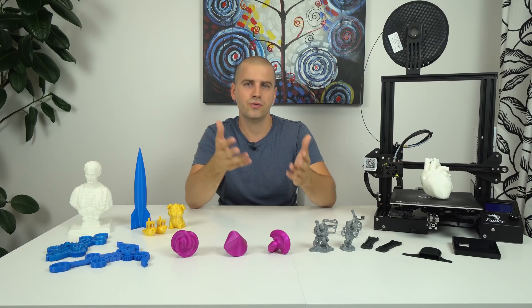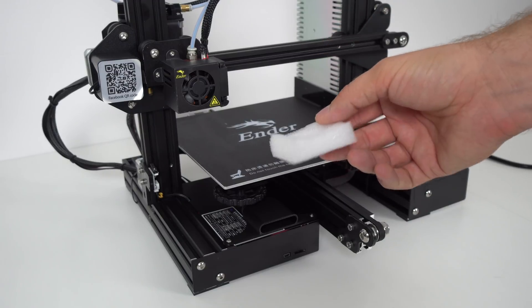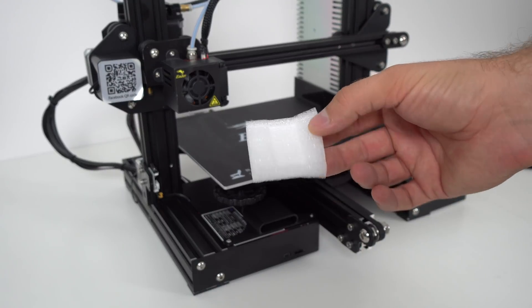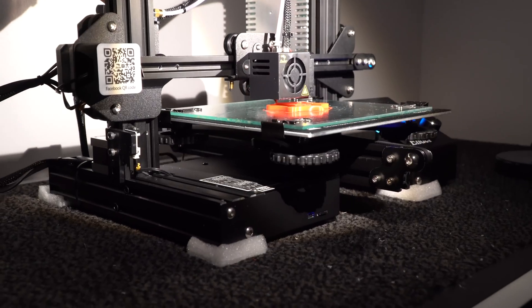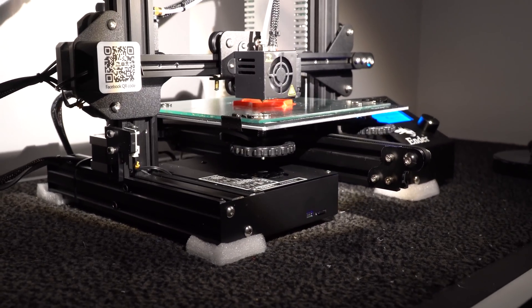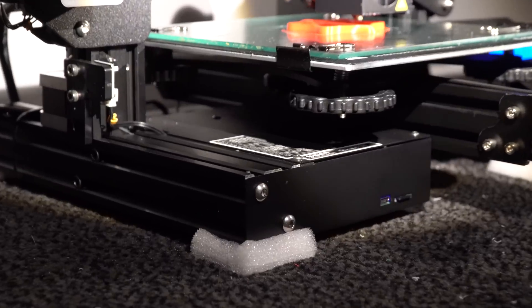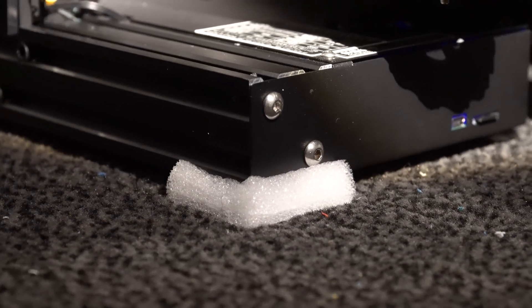I was using these foam pieces to lower vibration. You can simply cut few corners of the packaging foam and place it under every corner. They work fine but they don't last too long as they can't really support the printer weight longer than a day or two.